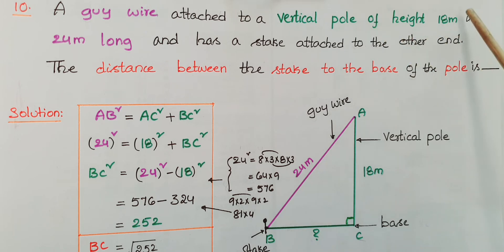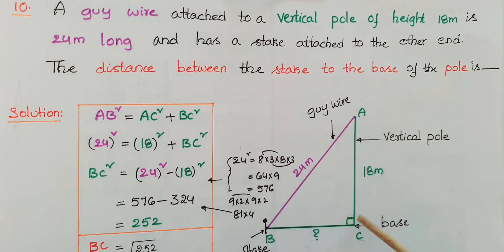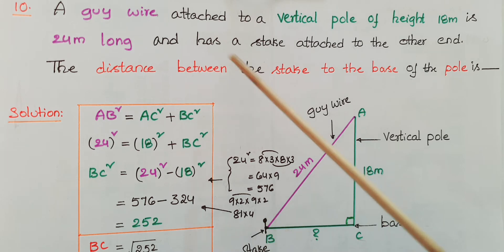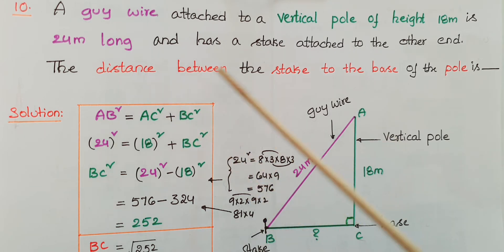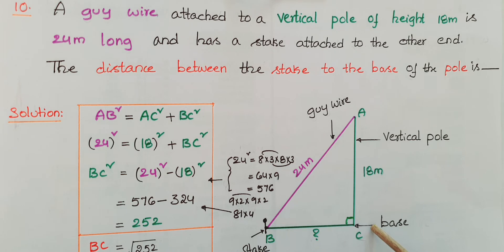This is the 10th problem. A guy wire attached to a vertical pole of height 18 meters is 24 meters long and has a stake attached to the other end. We have to find the distance from the stake to the base of the pole, that is BC.